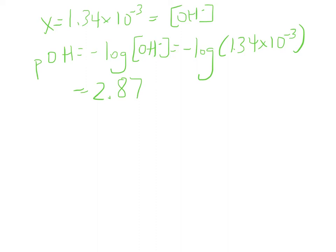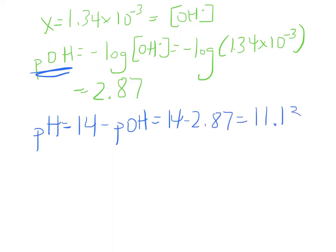The problem is that's pOH, and we're looking for pH. So pH is 14 minus pOH, or 14 minus 2.87. And we end up with 11.13. That's the first part of the problem.